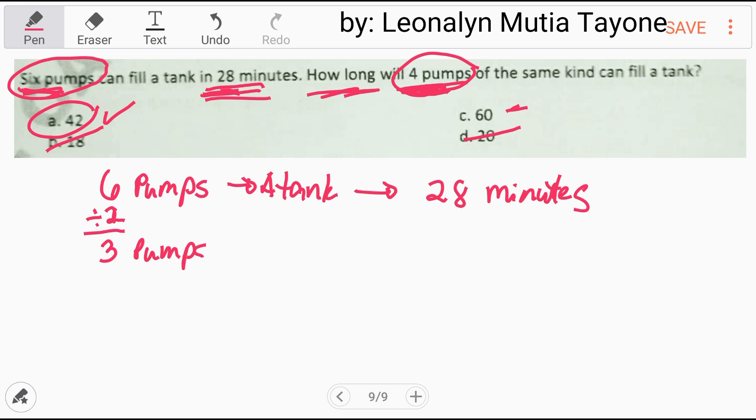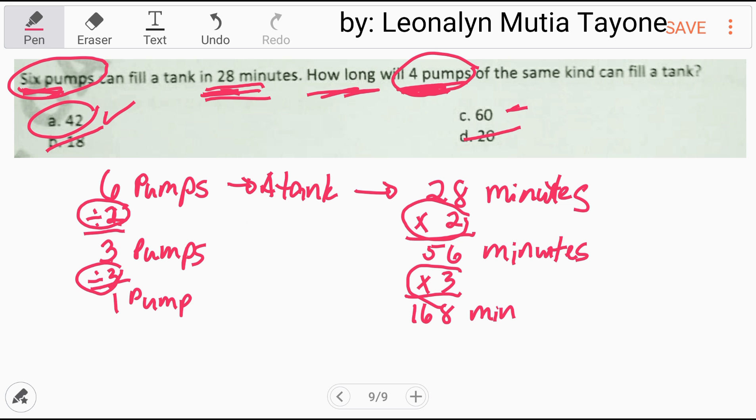The less worker, mas more ang time. So kung half lang sa pump ang magamit, tatlo bali, ma-multiply mo yung time mo ng two din. Nag-divide ka ng two, nag-multiply ka ng two. And this is 56 minutes kung tatlong pumps. Kung i-divide mo pa ng tatlo ito para isang pump na lang, mag-multiply ka ng three dito. And this will be 168 minutes. Pansin ninyo, kung nag-divide tayo, so mas lesser na ang nagtrabaho, bali yung pumps, madoble yung oras. Times two. Divided by three, times three.